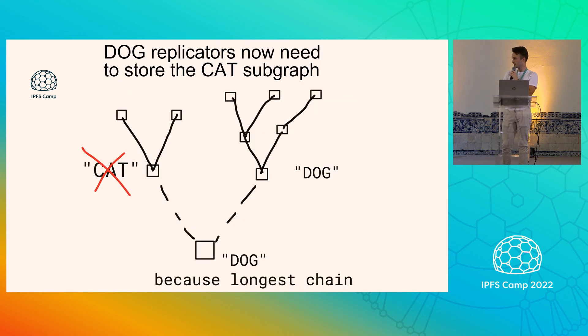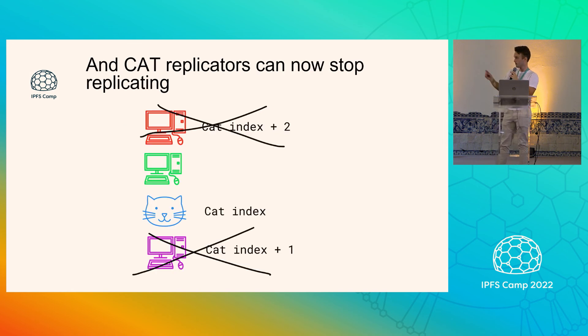So what basically happens with this case is when the dog and the cat tree merges, it's going to say that the cat tree is kind of shadowed. So every computer who has been responsible for storing a cat state is not going to have to do that anymore.